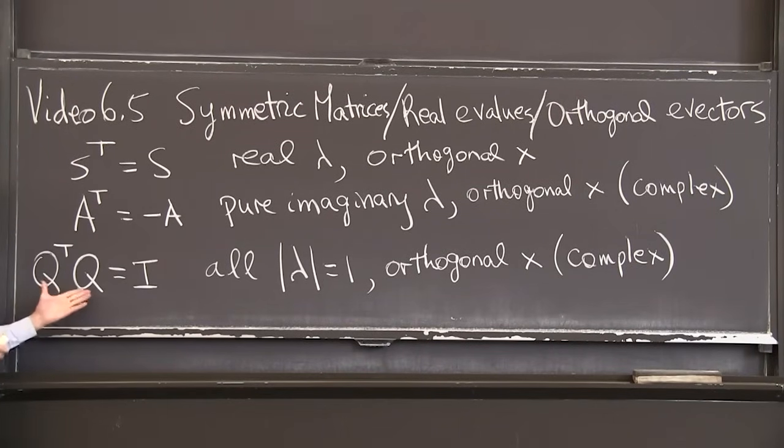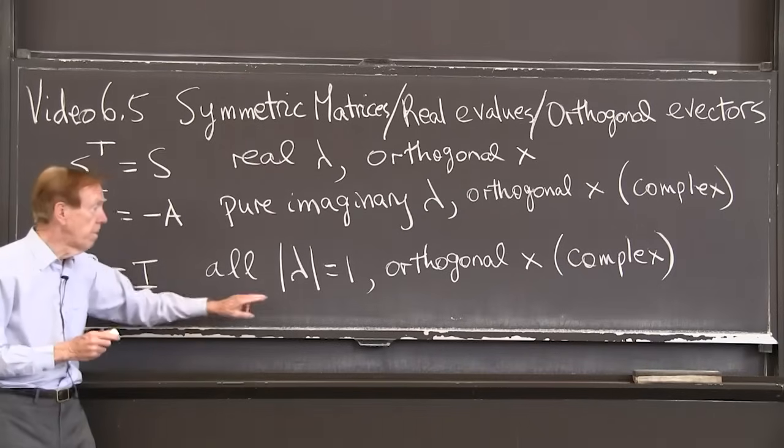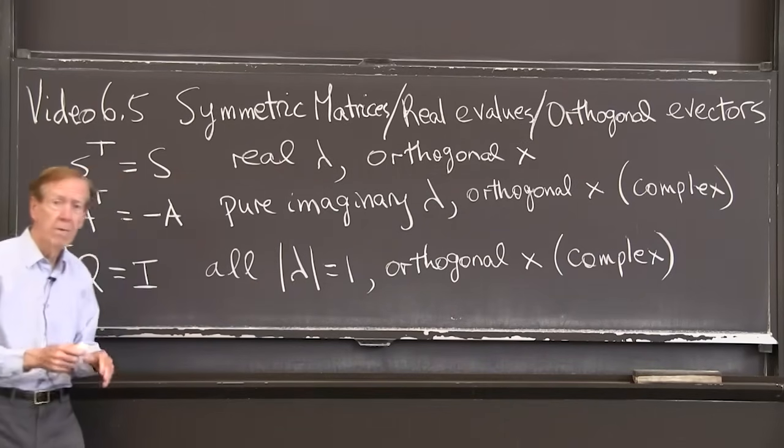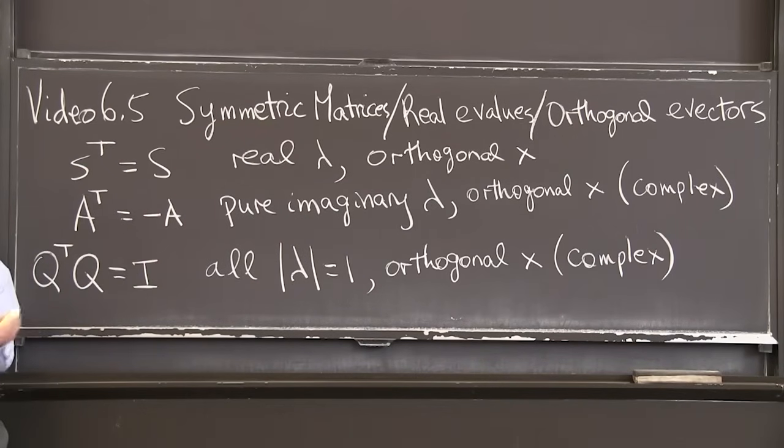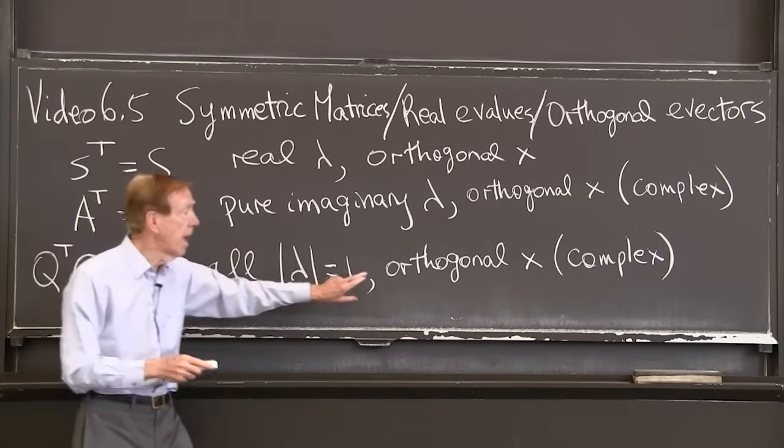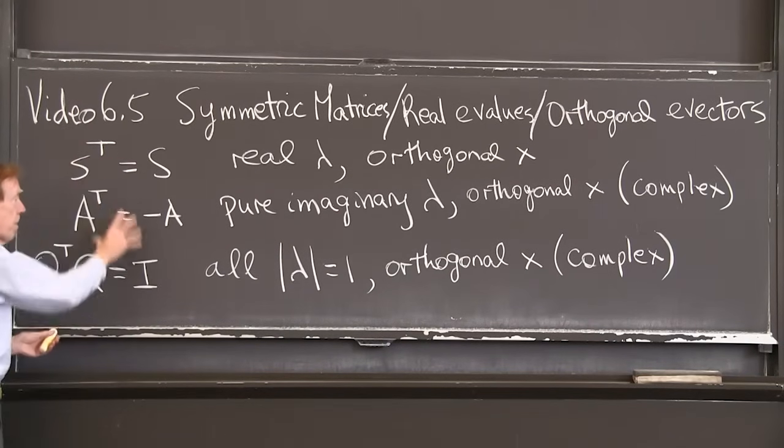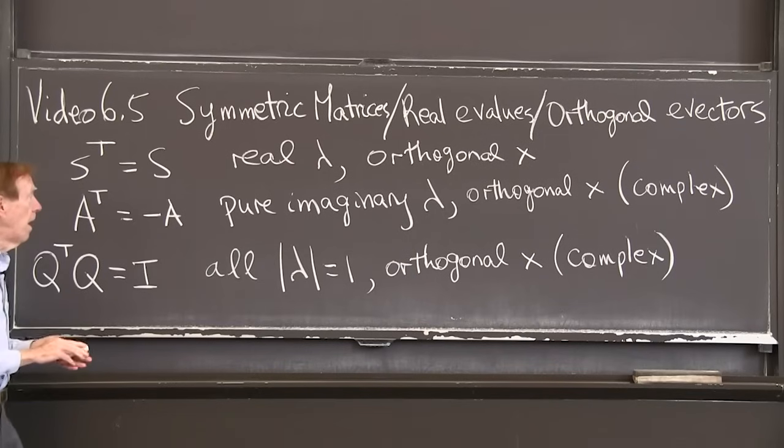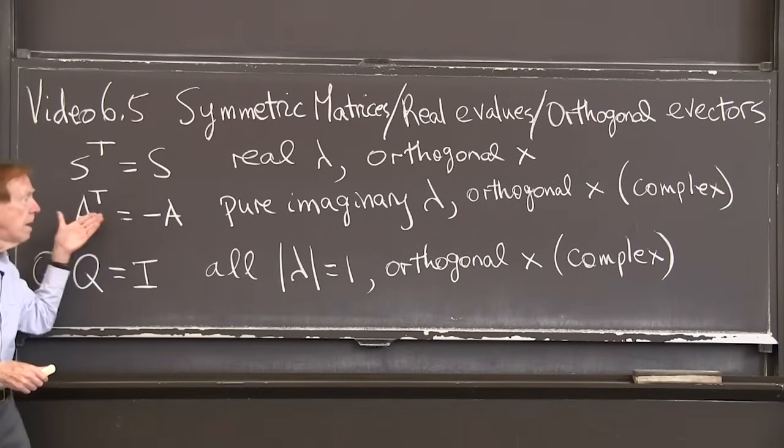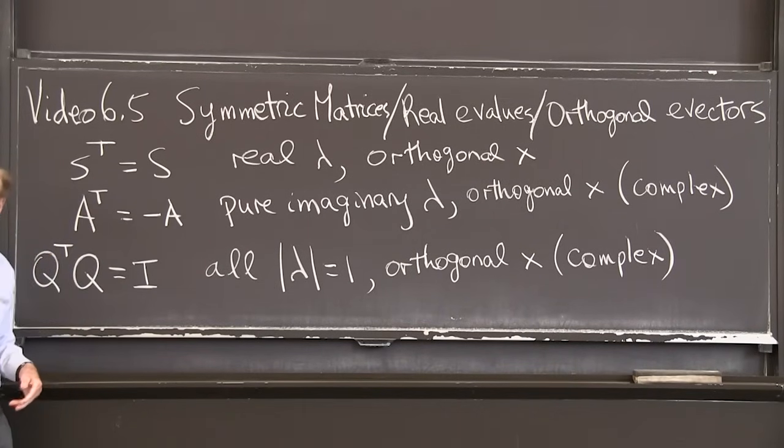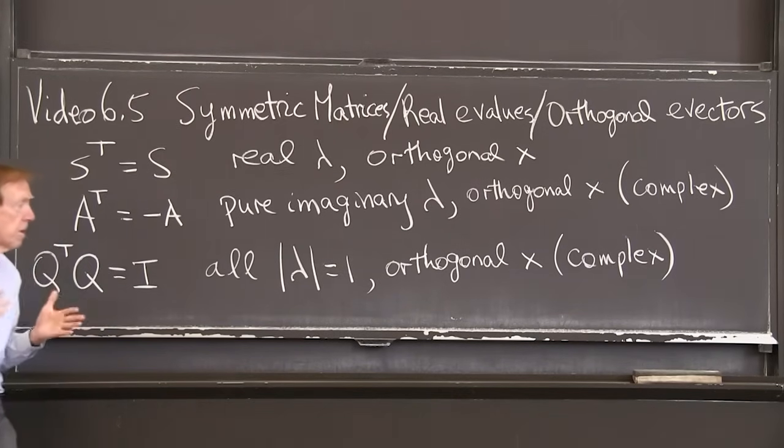Finally is the family of orthogonal matrices. Those matrices have eigenvalues of size 1, possibly complex, but the magnitude of the number is 1. And again, the eigenvectors are orthogonal. This is the great family of real, imaginary, and unit circle for the eigenvalues. I want to do examples.